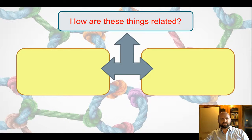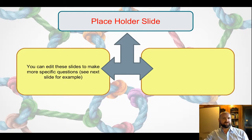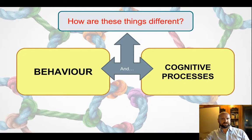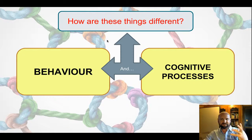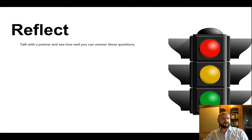A good recap activity is to project two terms on the board that are somewhat related — either different or similar in some way — and get students to discuss with a neighbor how they might be related. There's a placeholder slide where you can add your own terms or a specific question. Here I wanted them to distinguish between behavior and cognitive processes. This gets them thinking about what the words mean and exploring how they're related or different. It's a really good recap activity — takes zero planning and gets maximum engagement from students.